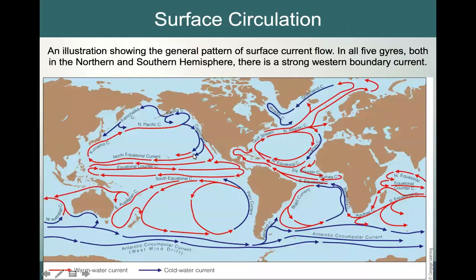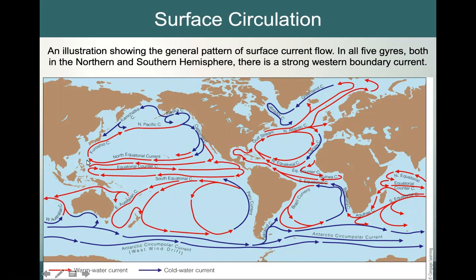So to remind us, we can look again at this surface circulation schematic showing us the surface circulation. We see that in each ocean basin we have a very strong western boundary current, including the Gulf Stream in the North Atlantic gyre. We also have the Kuroshio in the North Pacific gyre, and the East Australian Current in the South Pacific gyre, and the Brazil Current in the South Atlantic gyre.